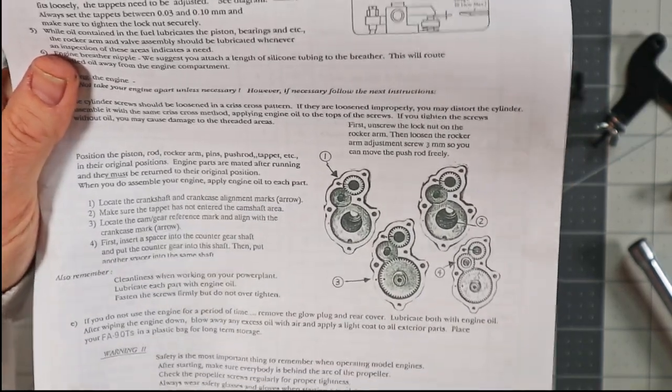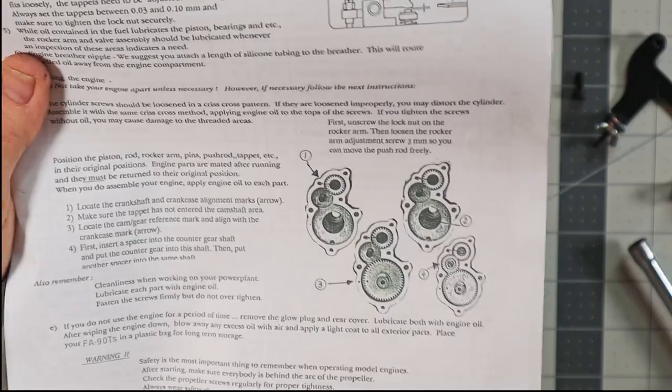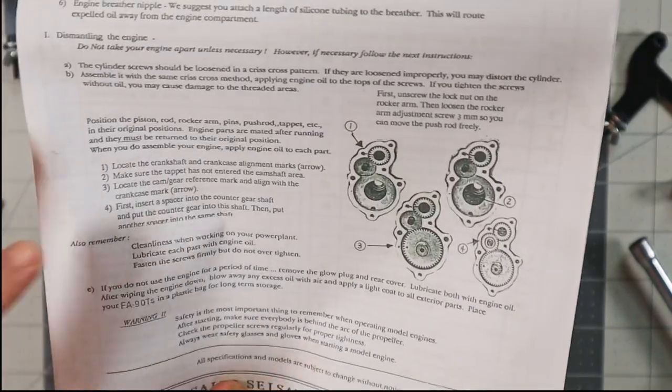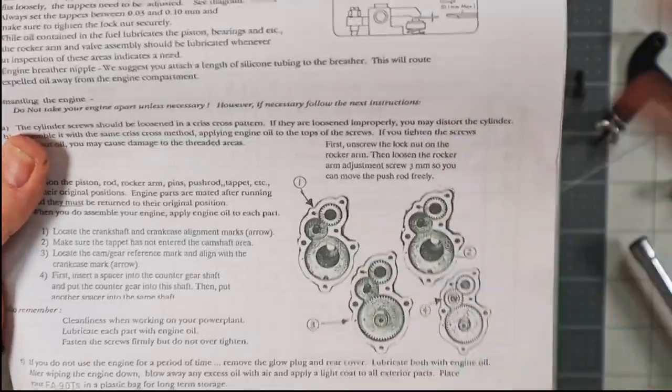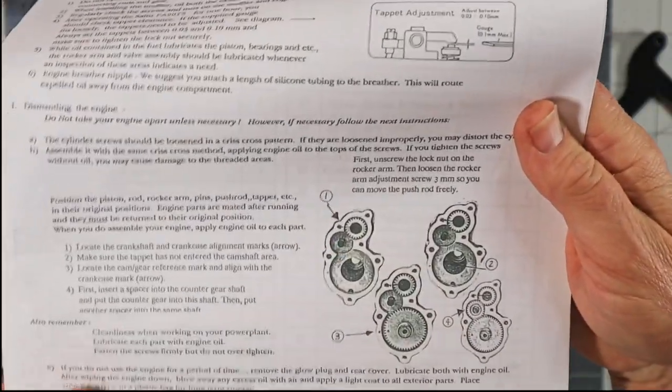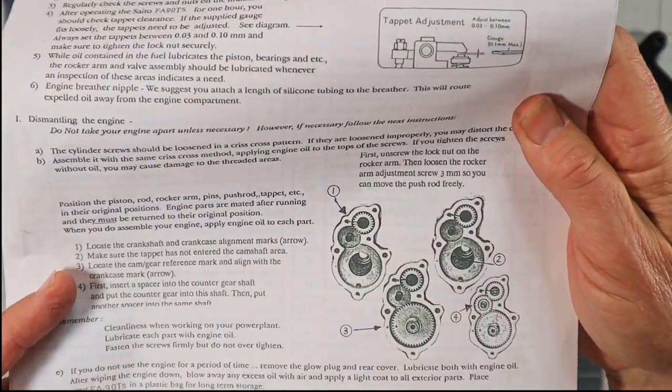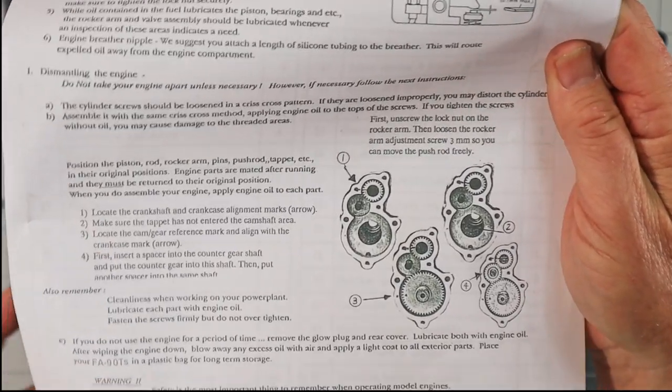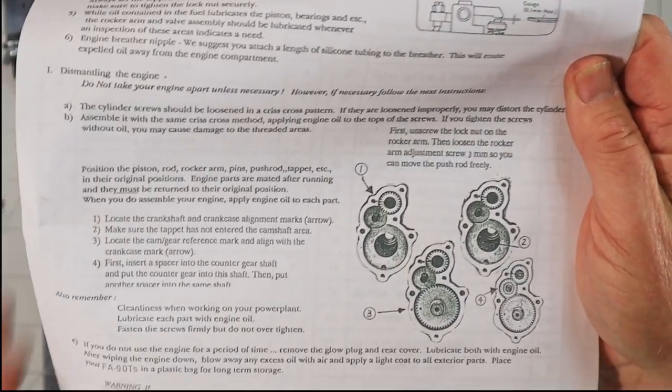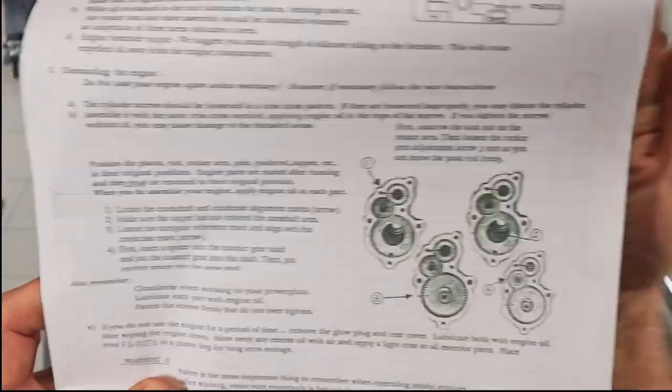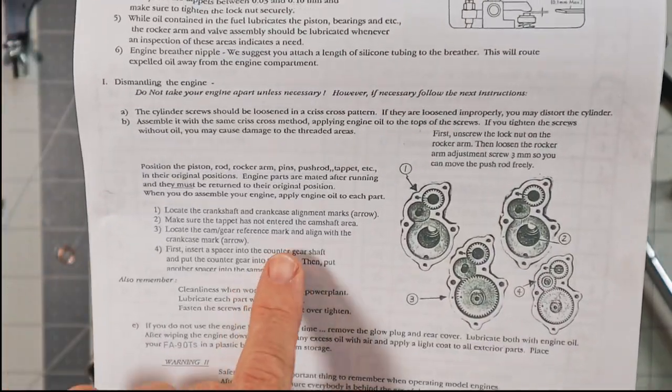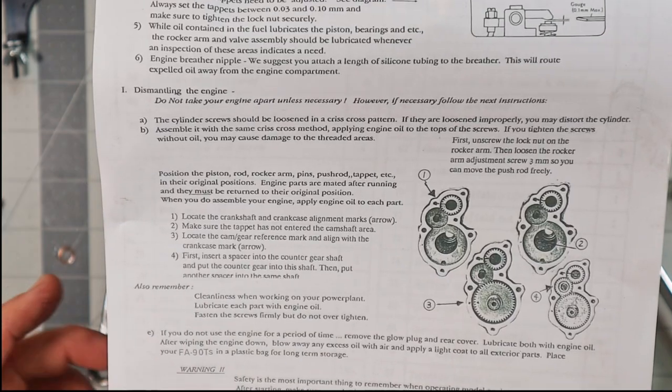All this is saying here, and I've done this on my 60T that I had at one time also, is just locate the crankshaft, crankcase alignment marks as I already said in figure number one or item number one there. Make sure the tappet has not entered the camshaft area so that it doesn't interfere with the lobes on the camshaft. And then locate the cam gear reference mark and align the crankcase with the crankcase arrow.